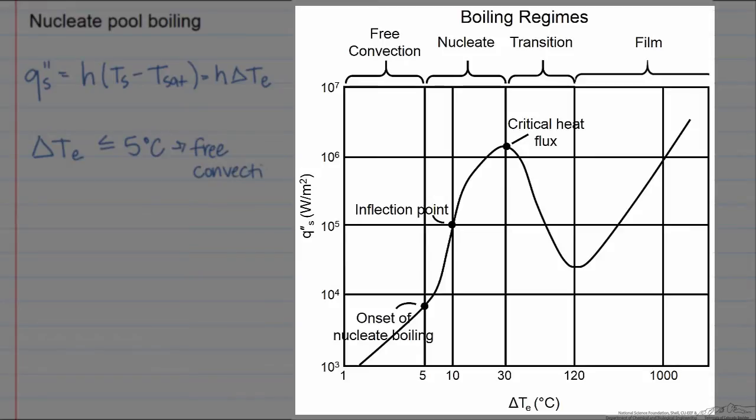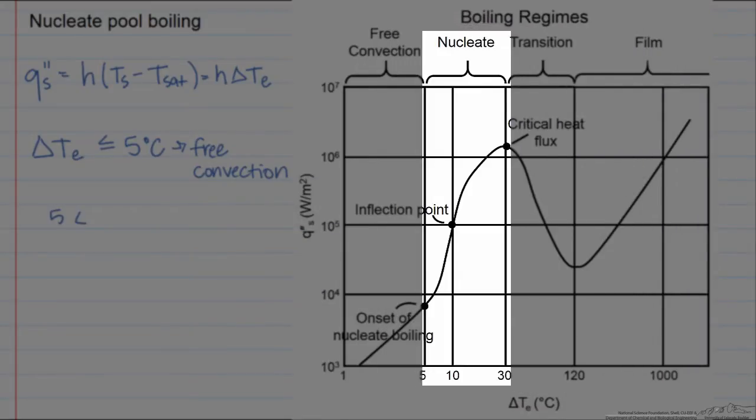What we're interested in is when this delta T E is between 5 and about 30, and this is known as nucleate boiling. Since many engineering applications are associated with this region, we'll discuss this one in this particular screencast.